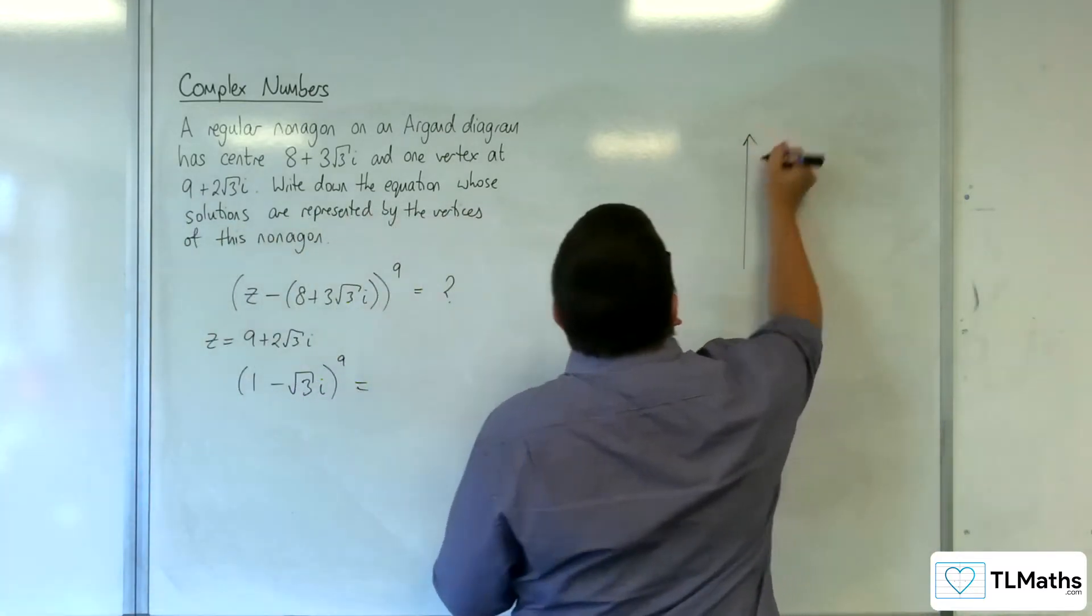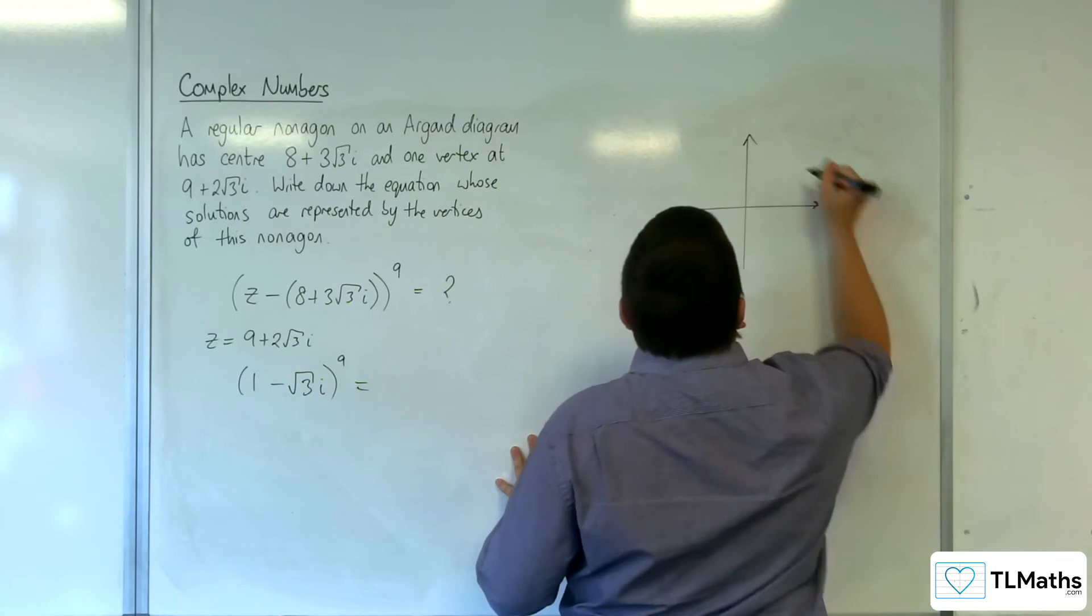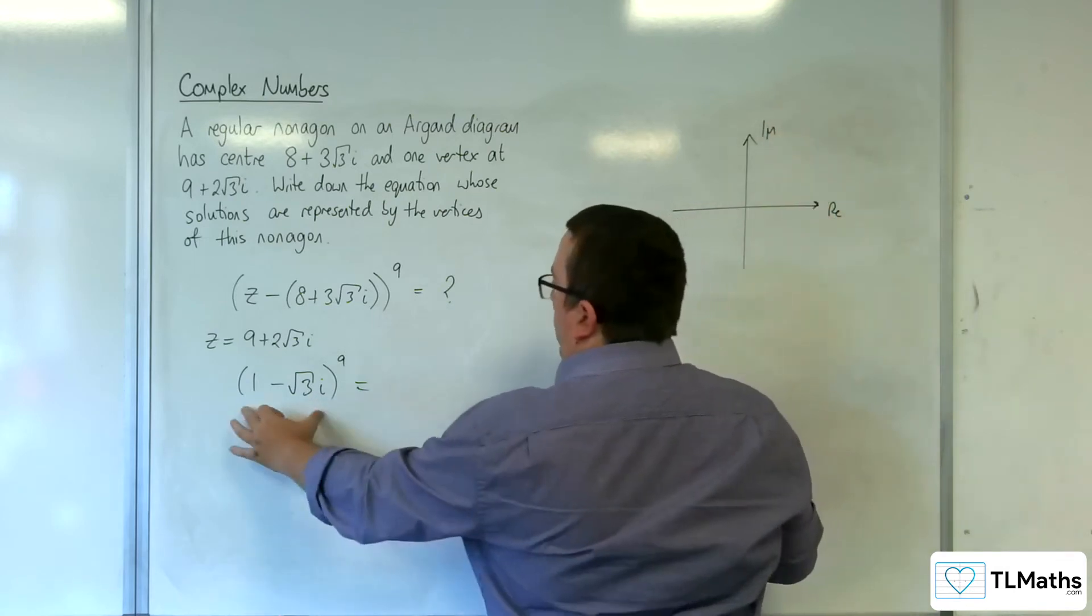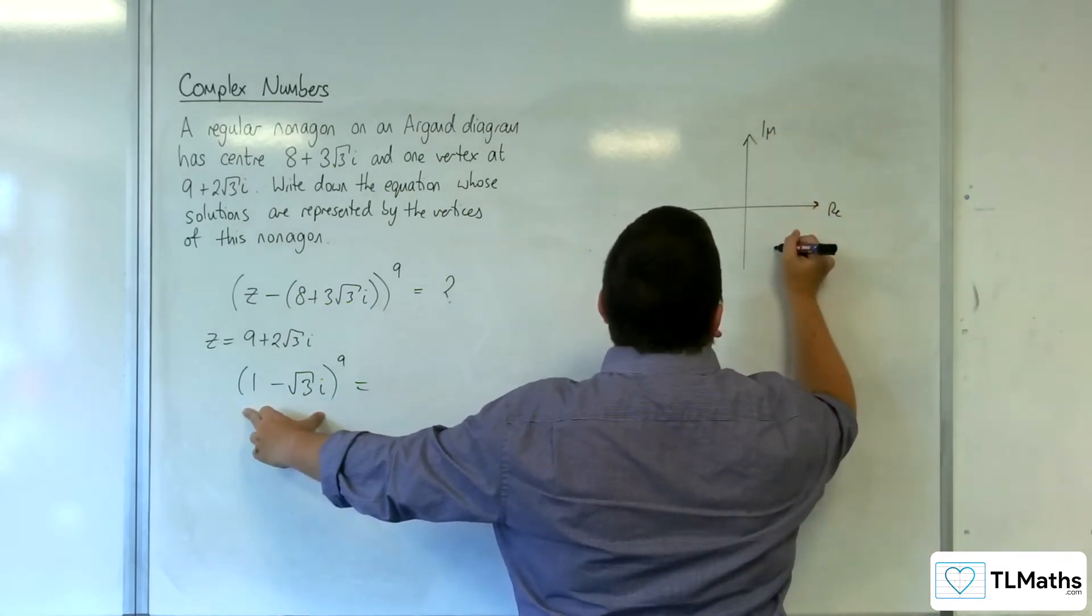So a quick little diagram, real imaginary, 1 - √3i, so 1 along √3 down.